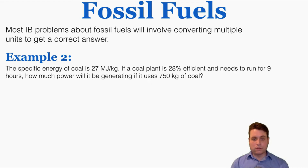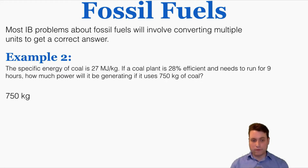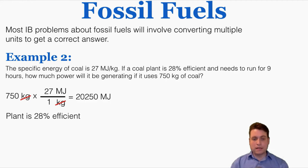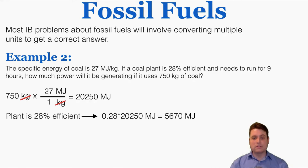In example number two, the specific energy of coal is 27 megajoules per kilogram. If a coal plant is 28% efficient and needs to run for nine hours, how much power will it generate if it uses 750 kilograms of coal? We start by finding how much energy is in the coal: 750 kg × 27 MJ/kg = 20,250 megajoules. Since the plant is 28% efficient, it retrieves only 28% of that energy: 0.28 × 20,250 = 5,670 megajoules of useful electrical energy.